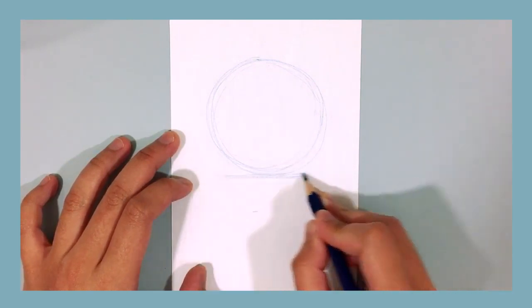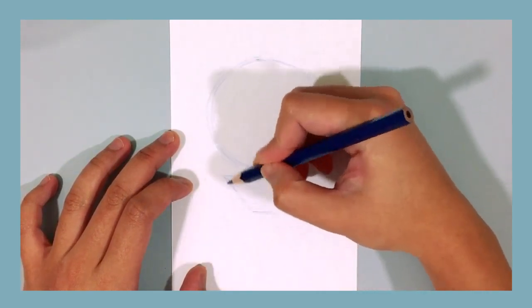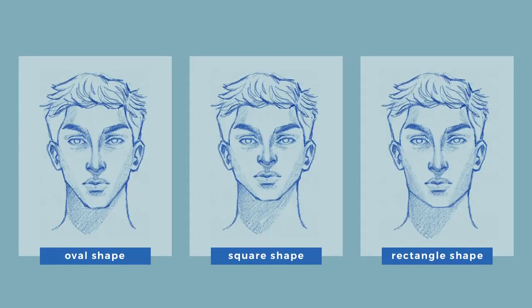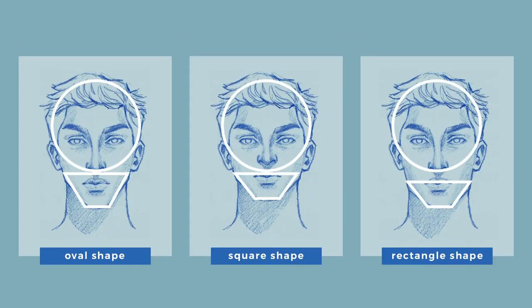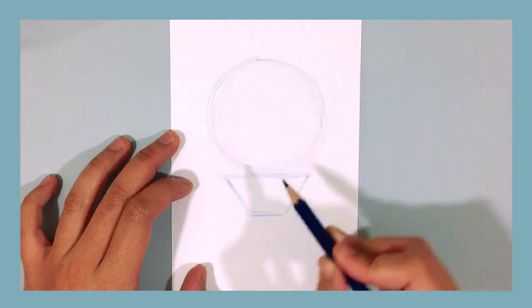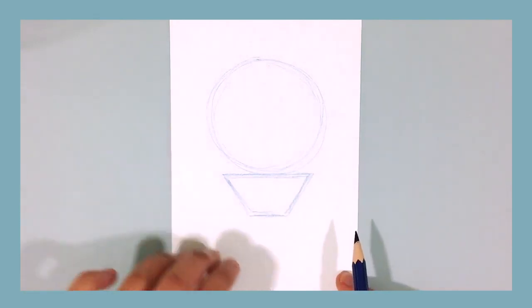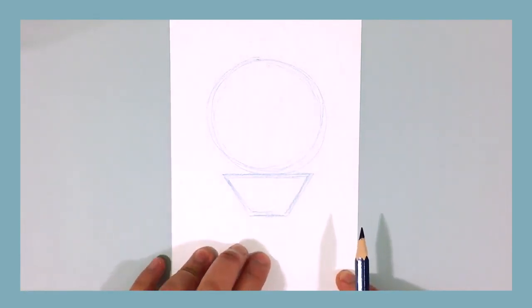The height of this trapezium can change to create different male face shapes. For example, a tall trapezium creates an oval and triangular face shape, whereas a short trapezium creates a round or square face shape. You can also increase the distance of the short trapezium to the circle to create a rectangular face shape. For this demonstration, we are going to use a circle and a tall trapezium combination to create the common oval face shape.